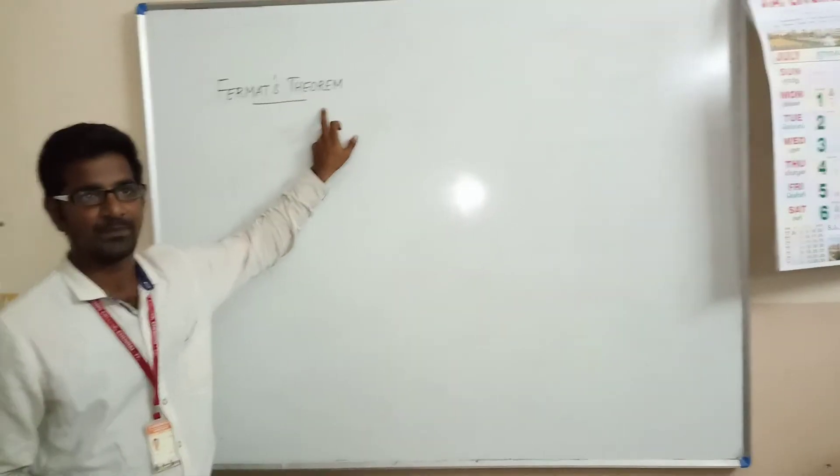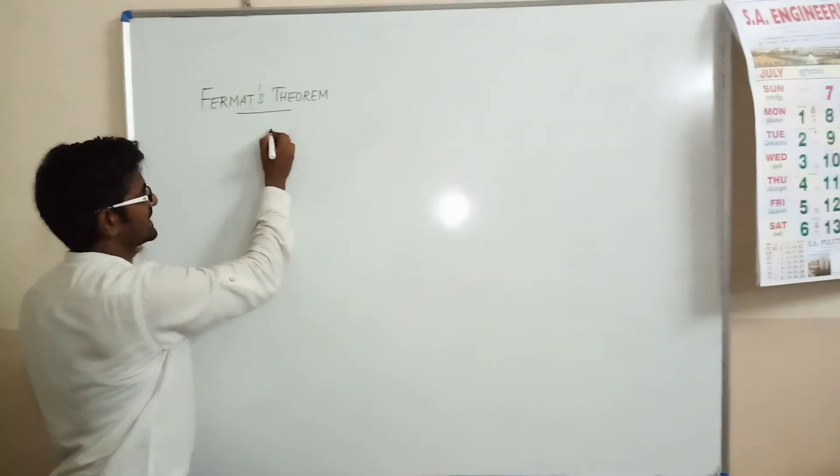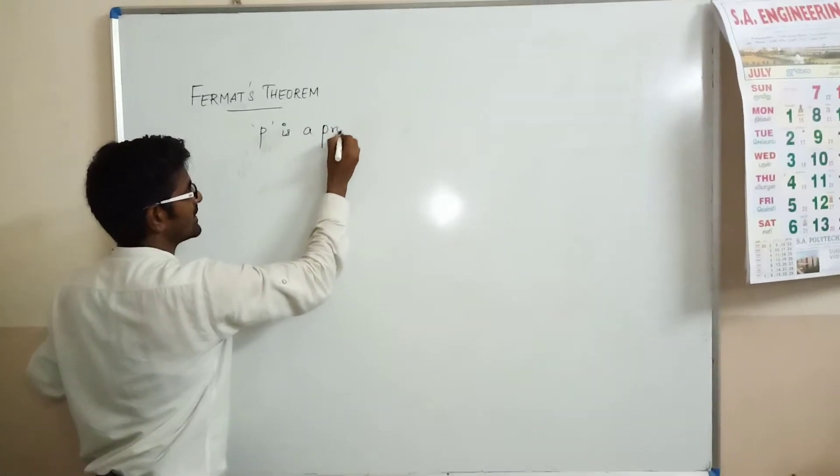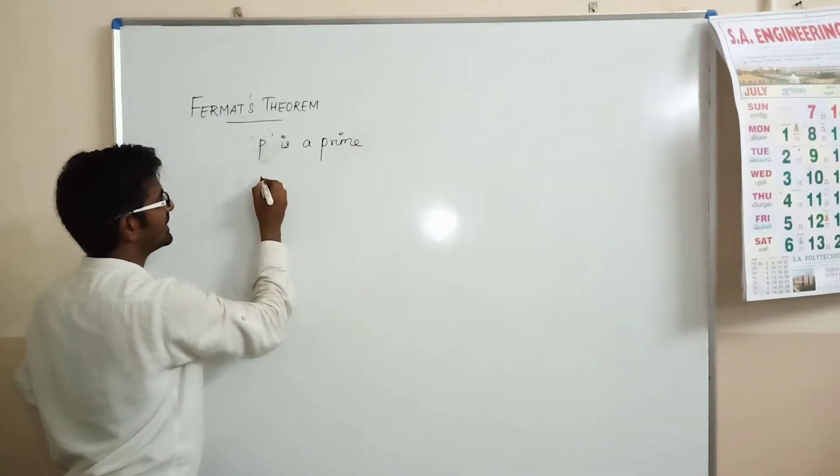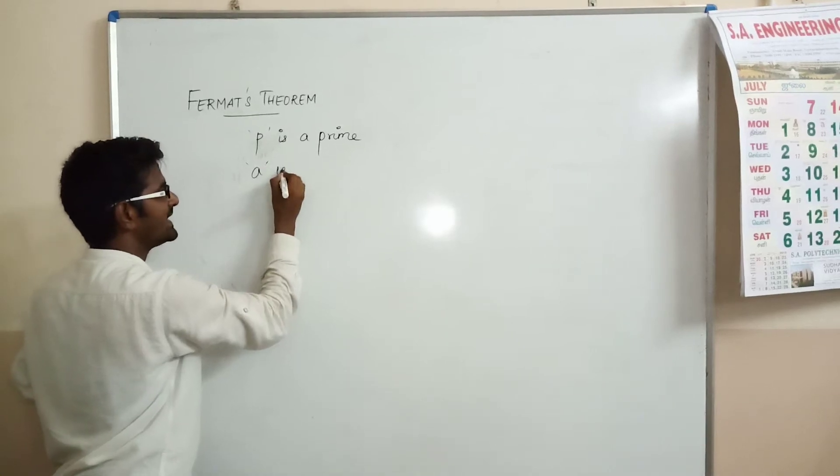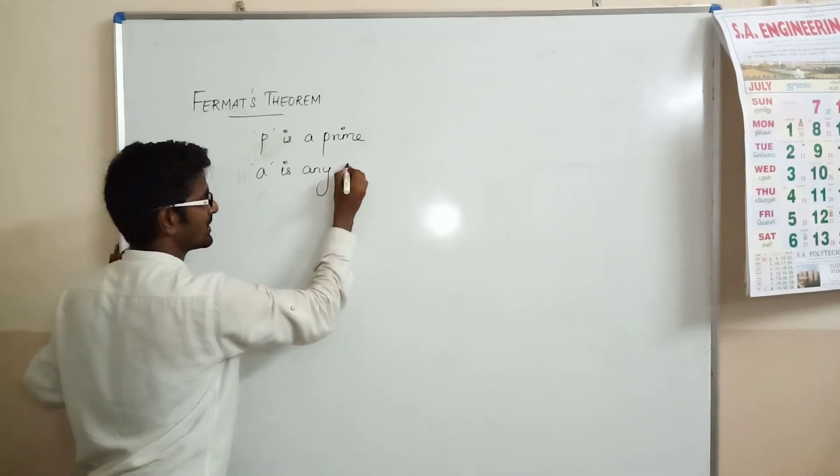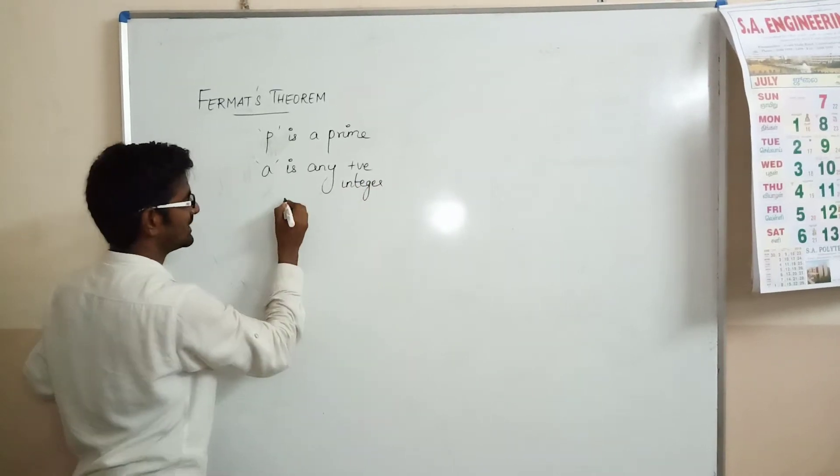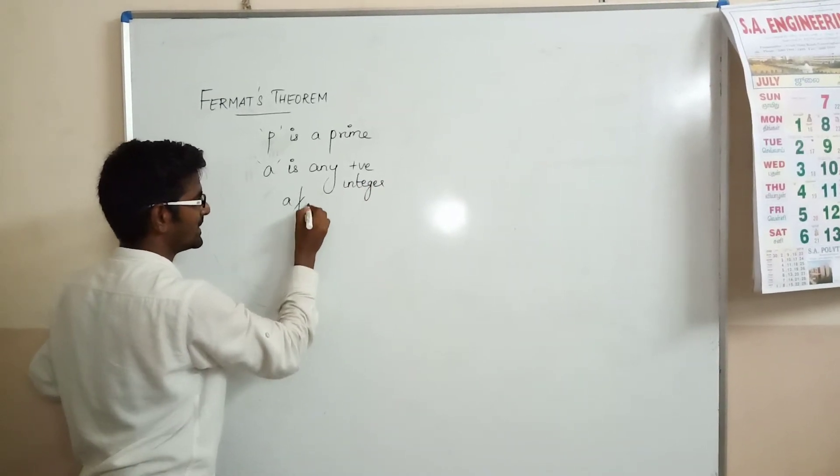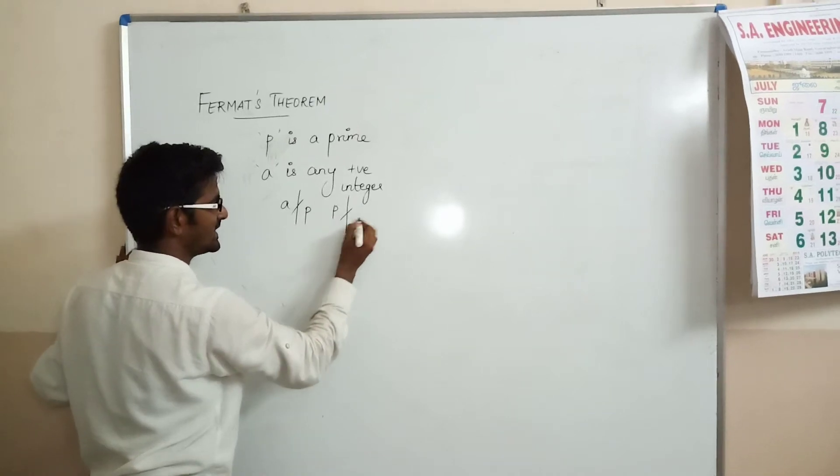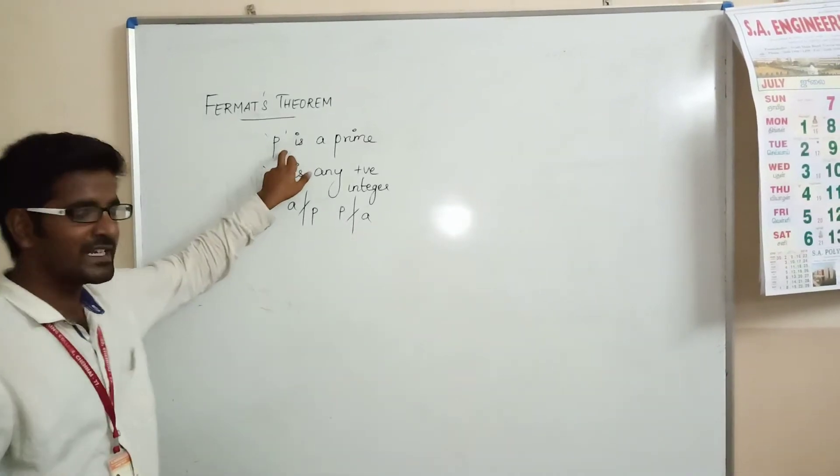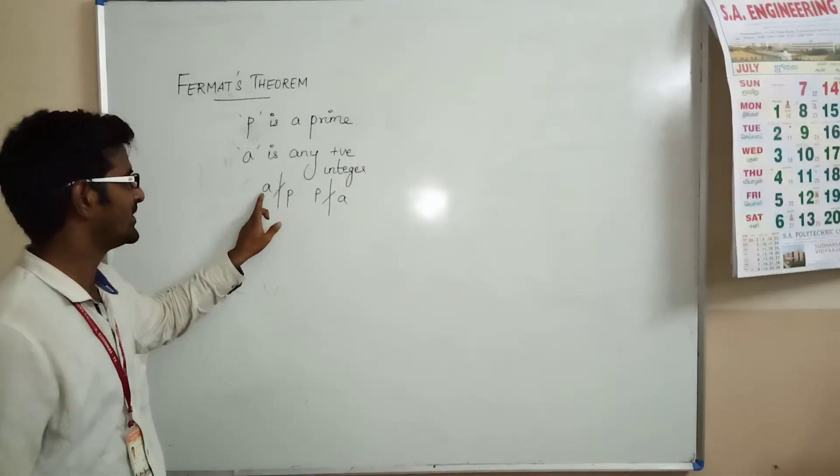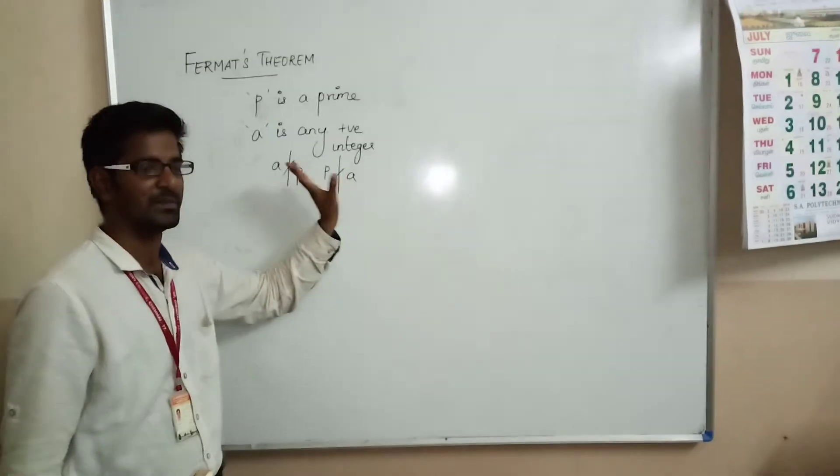See Fermat's theorem. Fermat's theorem states that if p is a prime number and a is any positive integer, with one condition: a does not divide p, or p does not divide a. So if p is a prime number and a is any positive integer such that p is not divisible by a, or a is not divisible by p,